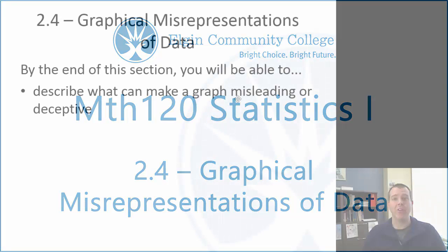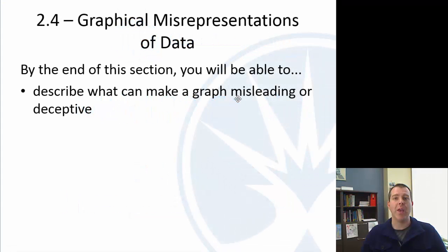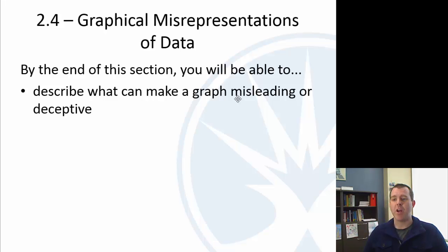Hi, this is Professor Dan Kernler. This is another video in my Math 120 Statistics series. This is the last one from Chapter 2. We're going to talk about how some data can be misrepresented — specifically, what can make a graph misleading or deceptive. We're going to focus on two primary methods for that.